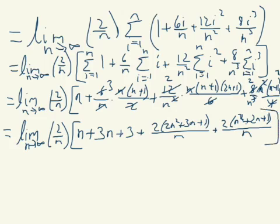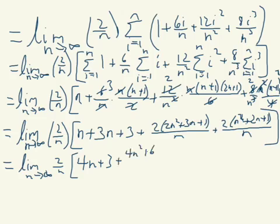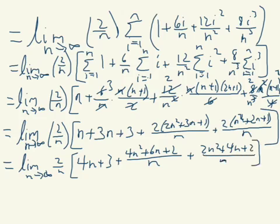Okay, now let's take our time here. One more step of simplifying and then we'll start pushing stuff around. 2 over n, this becomes 4n plus 3 plus 4n squared plus 6n plus 2 all over n, and the last part 2n squared plus 4n plus 2 all over n. Okay, big step here.